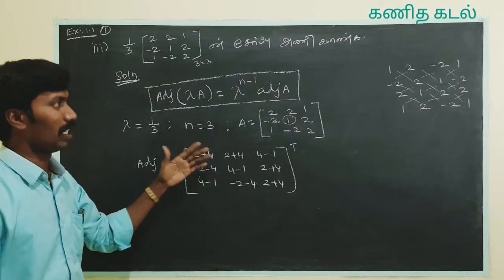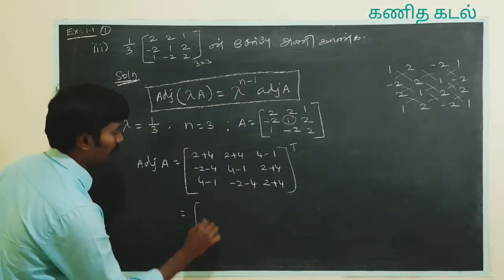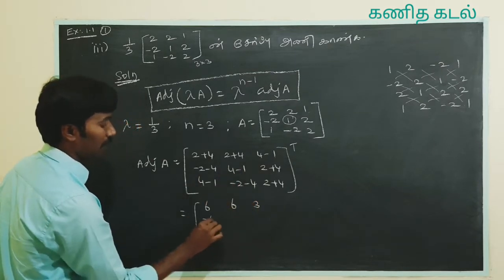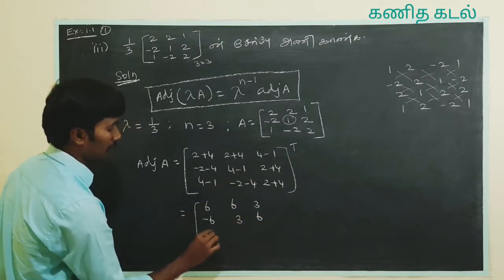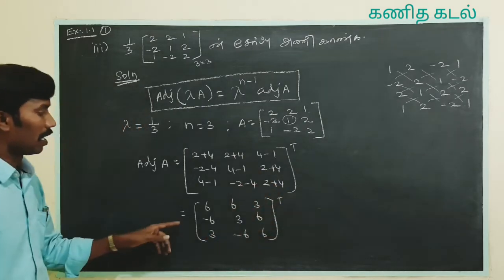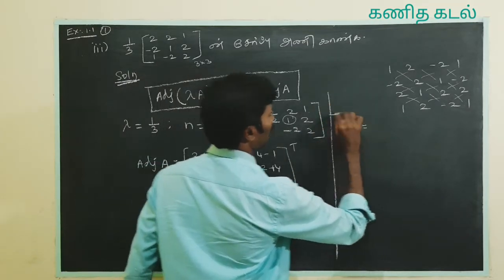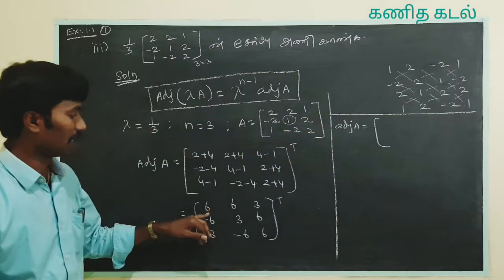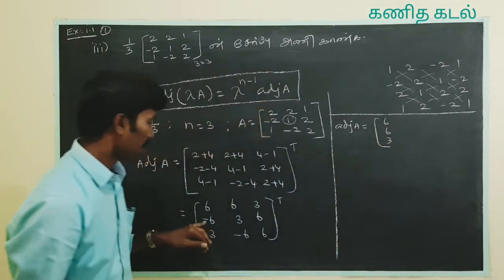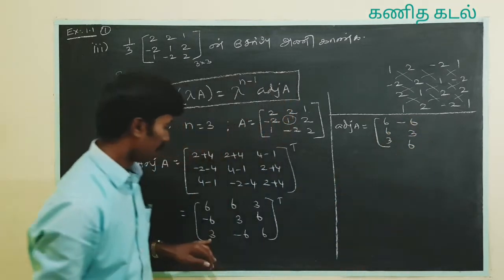5. If we check that in this video, it'll show how to do the cofactor calculation. So now we can do this simply: 6, 6, 3, minus 6, 3, 6, 3, minus 6 — the whole transpose. Therefore adjoint A is equal to transpose: 6, 6, 3 row; 6, 6, 3; minus 6, 3, 6; minus 6, 3, 6; 3, minus 6, 6.